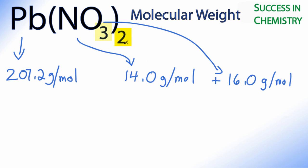So I've got to worry about this 2 here, and then the 3 right here. This 3 applies just to the oxygen, so I can put parentheses around this number here and multiply by 3.